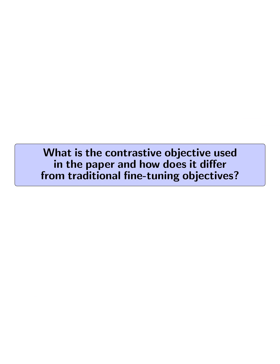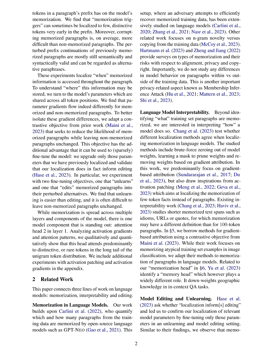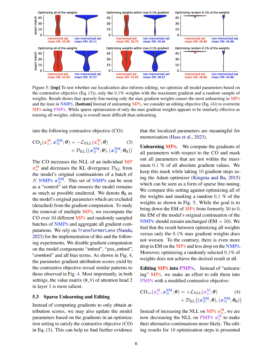What is the contrastive objective used in the paper, and how does it differ from traditional fine-tuning objectives? The contrastive objective aims to change the memorized continuations of memorized paragraphs (MPs) while preserving the model's continuations of non-memorized paragraphs (NMPs). This objective is designed to increase the negative log likelihood (NLL) of an individual memorized paragraph, and decrease the Kullback-Leibler (KL) divergence from the model's original continuations of a batch of NMPs.